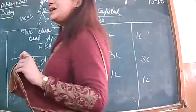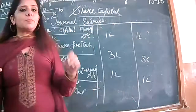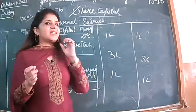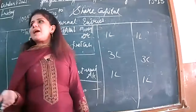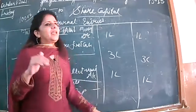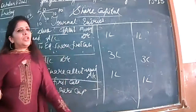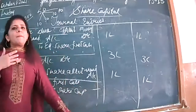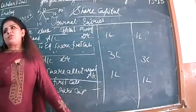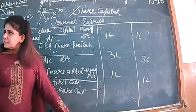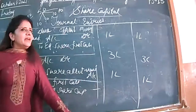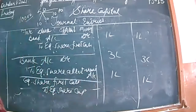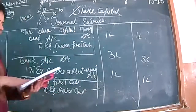Shareholders will apply for the shares of the company and give the application money. So first the application money is received, then what is due is due. The first due is received. Are these entries logic-wise clear? Let's see from the book.